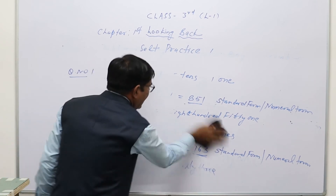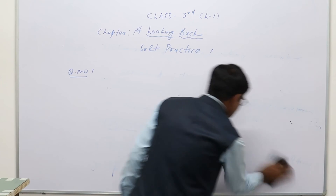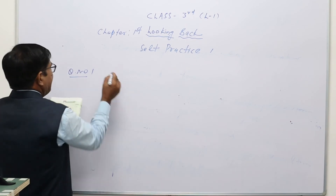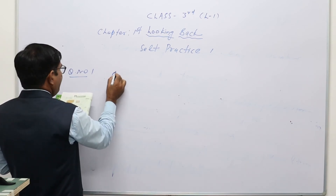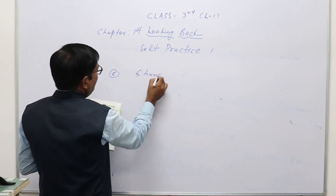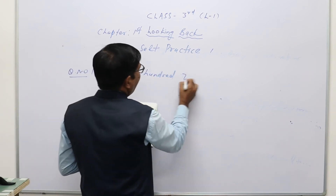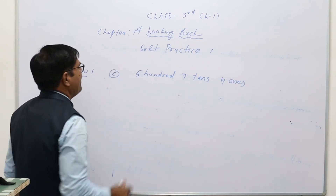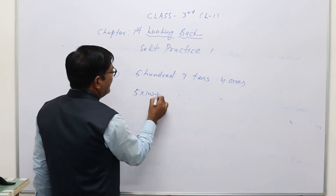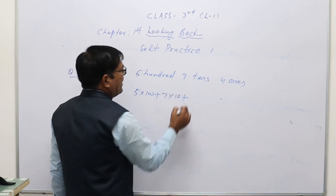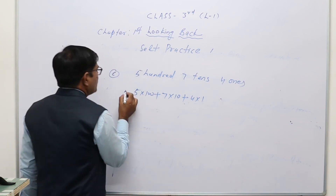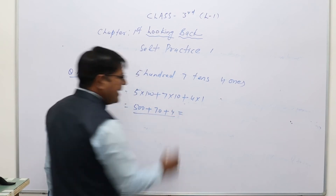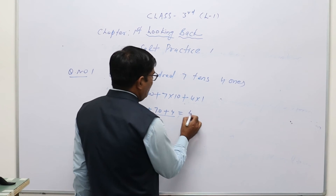Question c: 5 hundreds, 7 tens, 4 ones. In numeral form: 5 × 100 + 7 × 10 + 4 × 1 = 500 + 70 + 4. This is the expanded form. In standard form it equals 574.